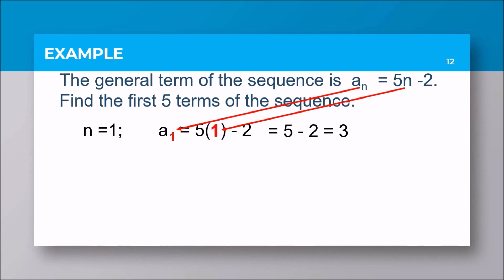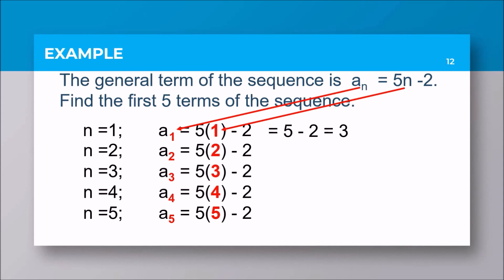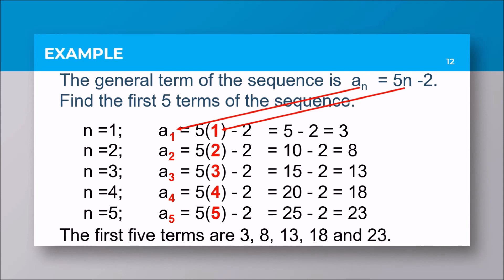It's your turn. Kindly pause the video and solve a sub 2 up to a sub 5. The answers are 8, 13, 18, 23. To finalize, our first five terms of the general term a sub n equals 5n minus 2 are 3, 8, 13, 18, and 23.